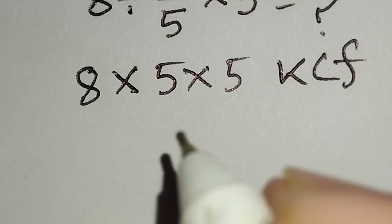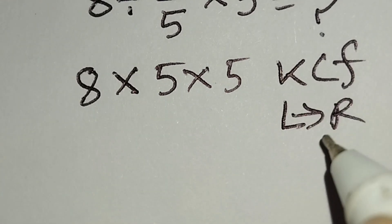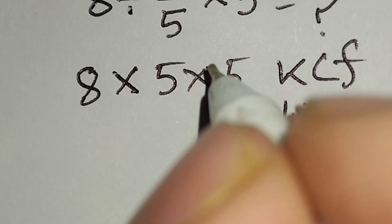When we have more than one multiplication, we have to work left to right. Therefore, at first we work with this multiplication, then this multiplication.